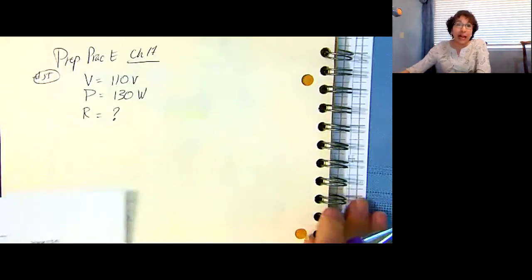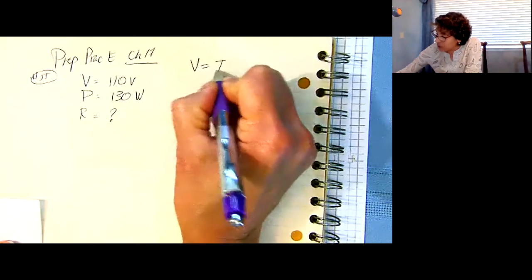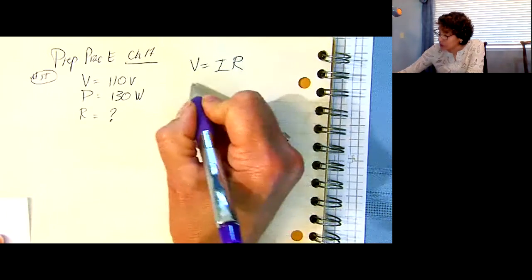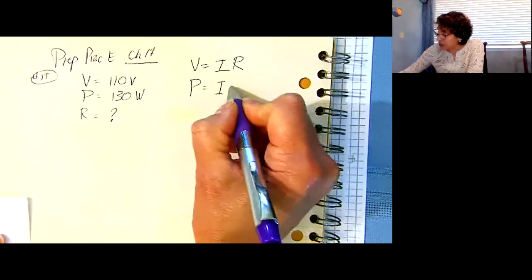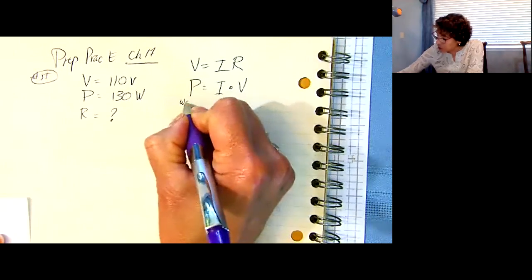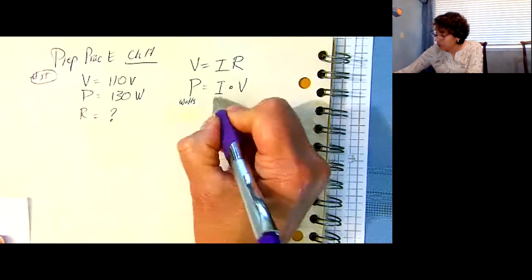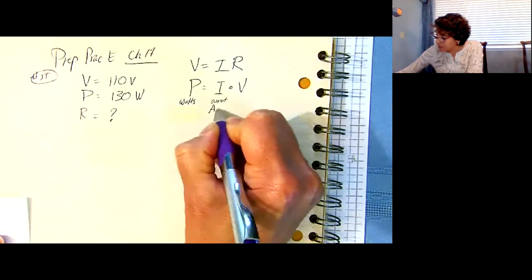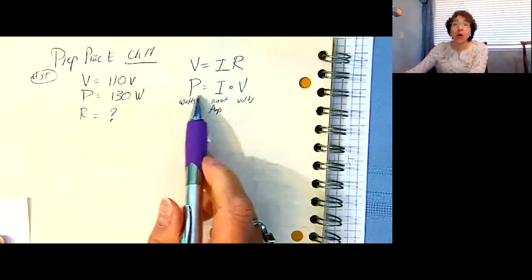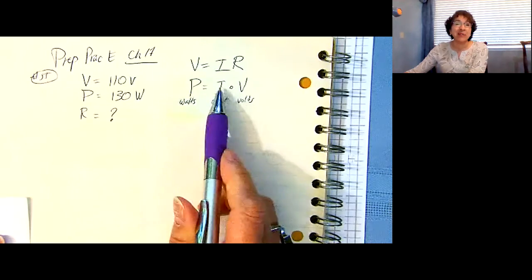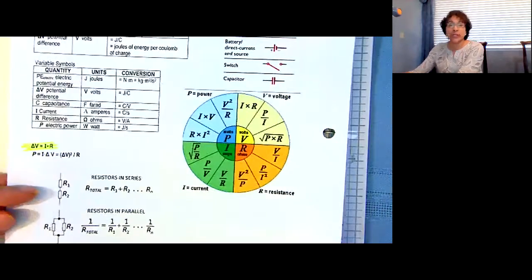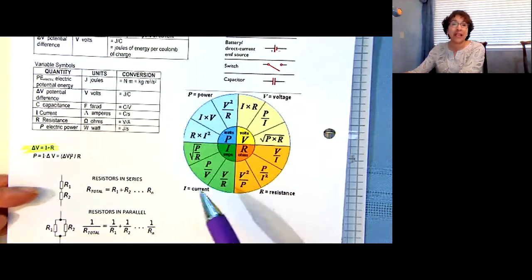So we want to know how much is the resistance. One of the things that I have memorized is that V is equal to IR. The voltage is the current times the resistance. But the other one is the power is equal to the current times the voltage. So an amp times a volt is a watt. You may want to refer to your worksheet here, and they give you all these different variations of the same formula.